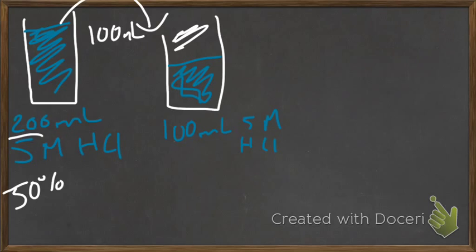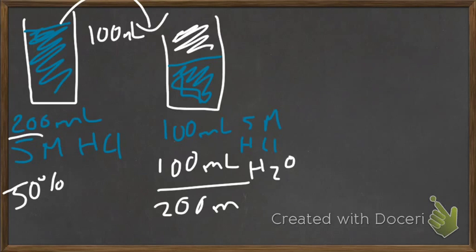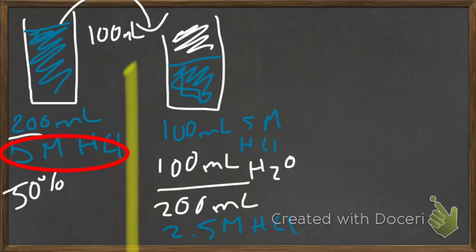So we're going to add 100 milliliters of H2O. So we end up with 200 mils total volume, but now our solution is, when we started with 5 originally, it's half, 2.5 molar HCl.